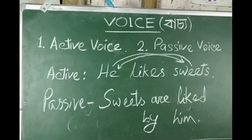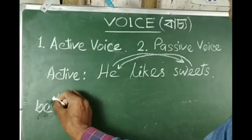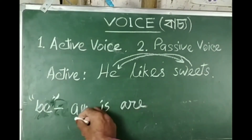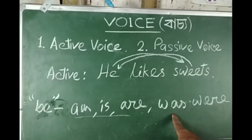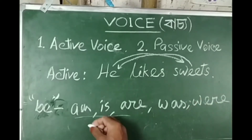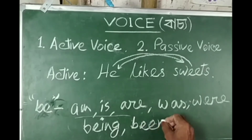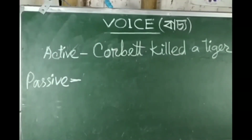For each tense, the auxiliary verb changes. Present tense uses 'is/are/am'. Past tense uses 'was/were', where singular uses 'was' and plural uses 'were'. Continuous tense uses 'being'. Perfect tense: present perfect uses 'been', past perfect uses 'been'. Future tense uses 'will be' or 'shall be'. All these forms are followed by the past participle.